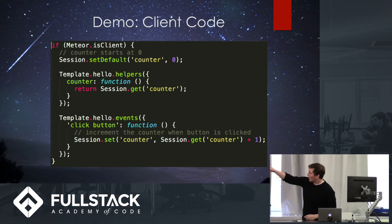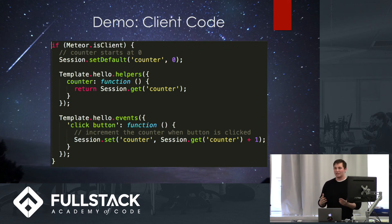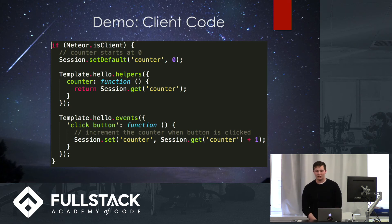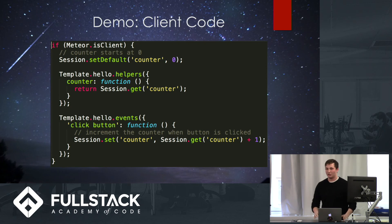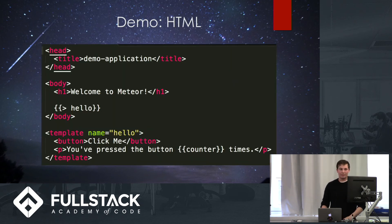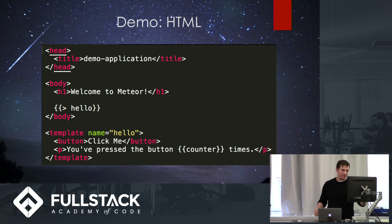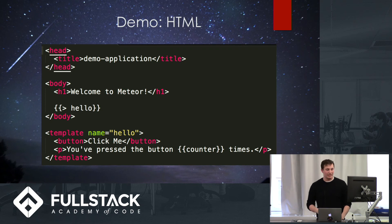You can see at the top it says 'if Meteor.isClient', so it checks what is accessing this code and runs accordingly. All it's doing is setting a session variable called counter, initializing it at zero, adding a click handler so when a button is clicked it increments the counter, and creating a template helper that returns the current counter value. The 'Meteor.isServer' block is where any server code would run. The HTML looks similar to what we've done with Angular — the curly braces initialize the template, and when you click the button the click handler increments the counter and it's immediately reflected on the client.